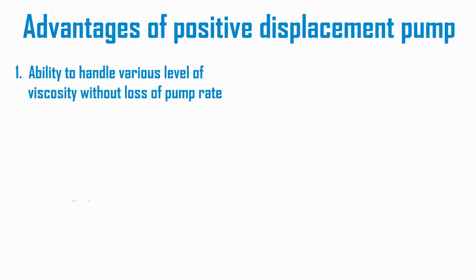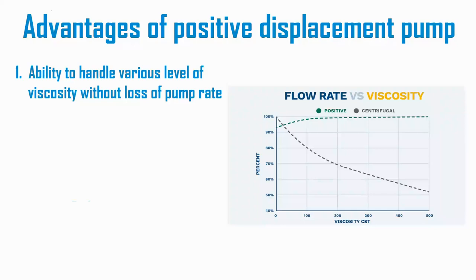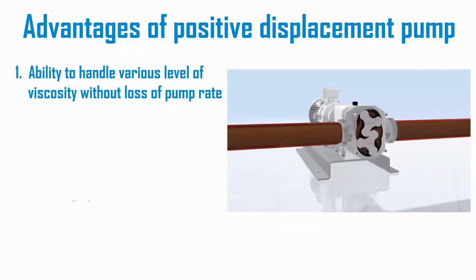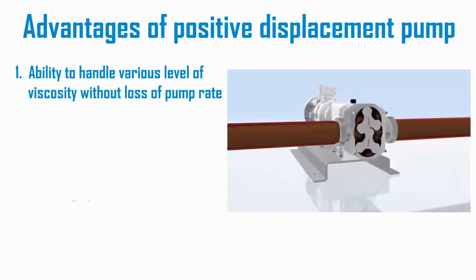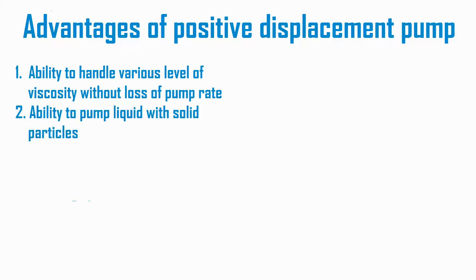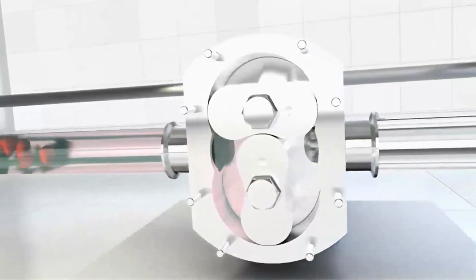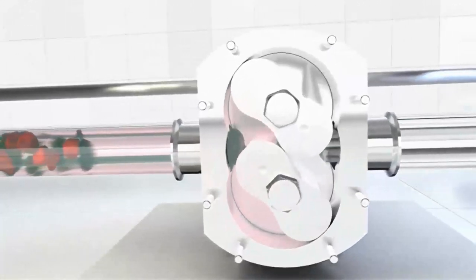The advantages of the rotary positive displacement pump compared to a dynamic pump or centrifugal pump: the rotary positive displacement pump is capable of pumping viscous liquids without decreasing the pump flow rate — for example, using a rotary lobe pump to pump chocolate liquid. It is also capable of pumping liquids filled with solids, such as a liquid filled with nuts, fruits, or other solid particles.